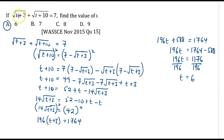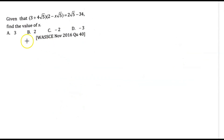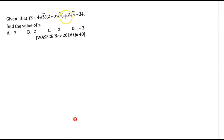If you are not sure whether your answer is right, you can substitute the value of t back into the equation to verify that t equals 6 is correct. Moving on to the next example: we have (3 plus 4 root 5) multiplying (2 minus x root 5), and this should give an answer of 2 root 5 minus 34. We need to find the value of x, so we need to expand the left hand side.